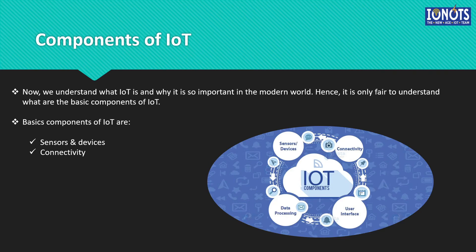By using cloud computing, users and companies don't have to manage physical servers themselves or run software applications on their own machines. The connectivity component helps the devices and sensors to connect to the cloud and send the data over there. Different methods can be used to achieve this: cellular, satellite, WiFi, Bluetooth, low power wide area networks, connecting via a gateway or a router, or directly connecting to the internet via the ethernet. Every option has its own set of pros and cons with respect to power consumption, bandwidth, and range. Therefore, the selection of method varies from application to application. In a nutshell, this component of IoT looks after getting the data — already collected by the first component — to the cloud.